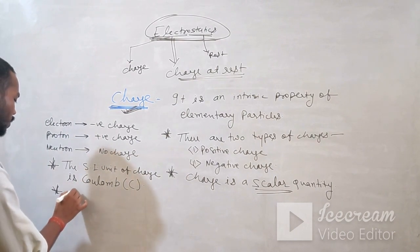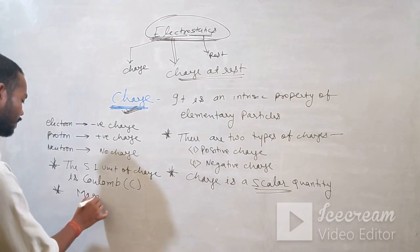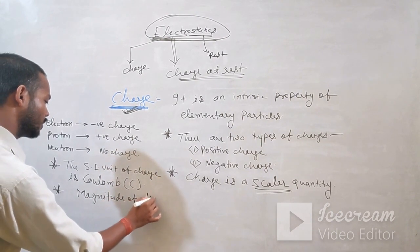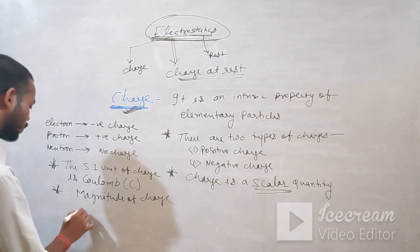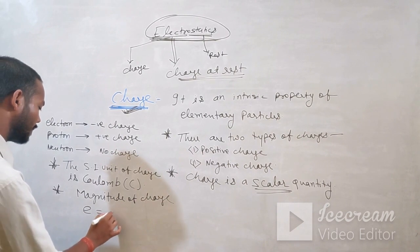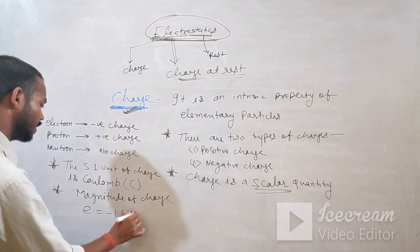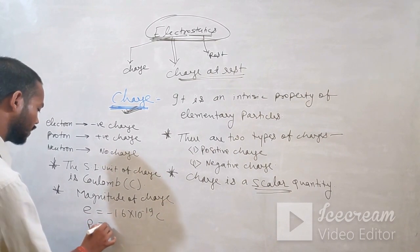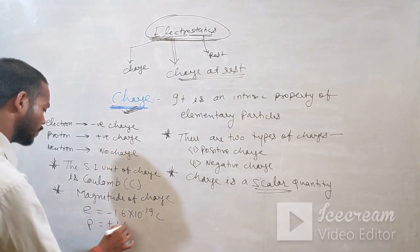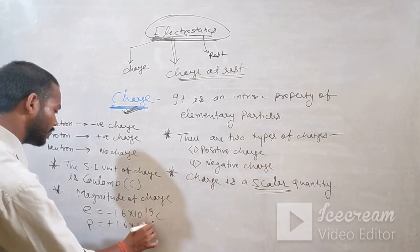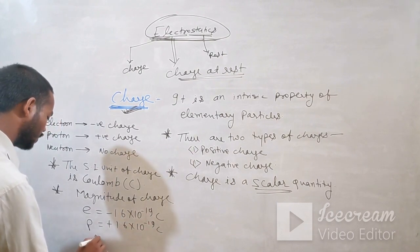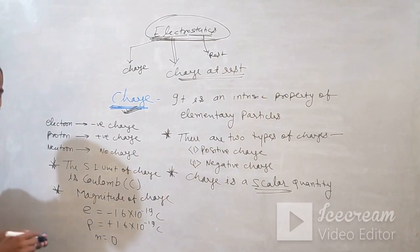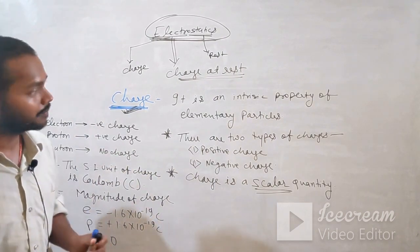The magnitude of charge on an electron is minus 1.6 × 10⁻¹⁹ Coulombs. On a proton it is plus 1.6 × 10⁻¹⁹ Coulombs. And on a neutron it is zero.